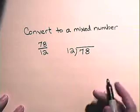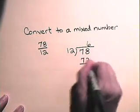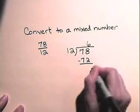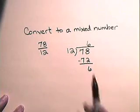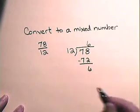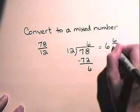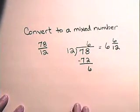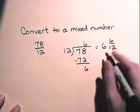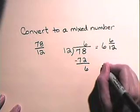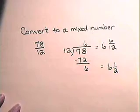Twelve divides into seventy-eight six times. We multiply six times twelve and get seventy-two, subtract, and we get a remainder of six. So seventy-eight-twelfths as a mixed number will be six and six-twelfths, which we will reduce to one-half. So seventy-eight-twelfths as an improper fraction is six and one-half as a mixed number.